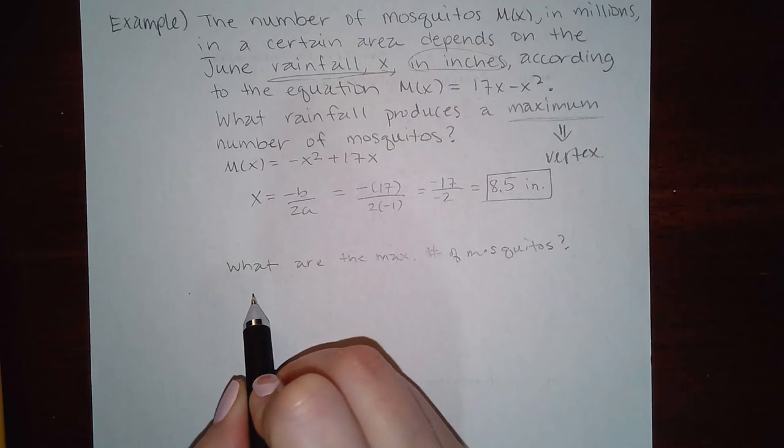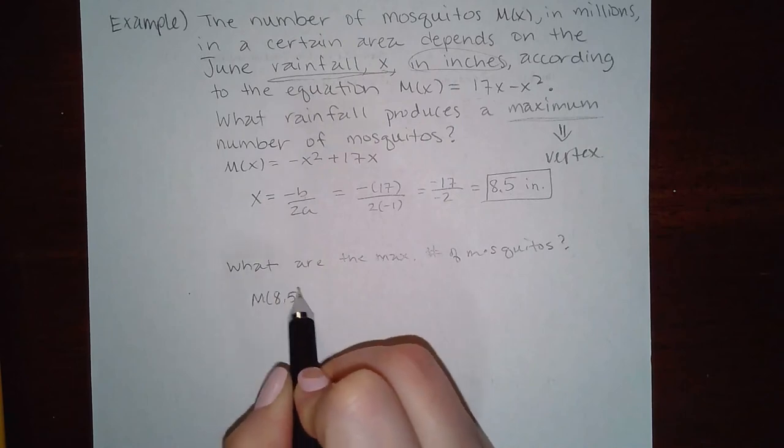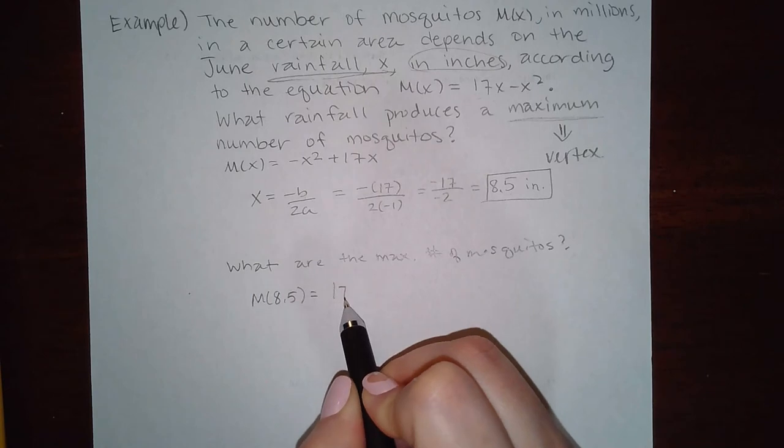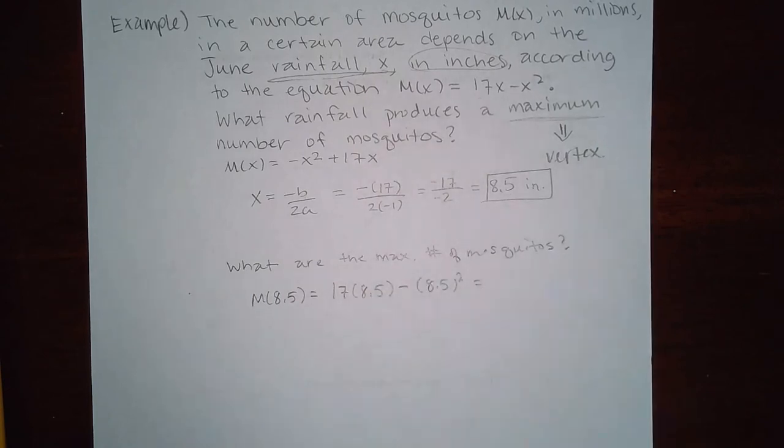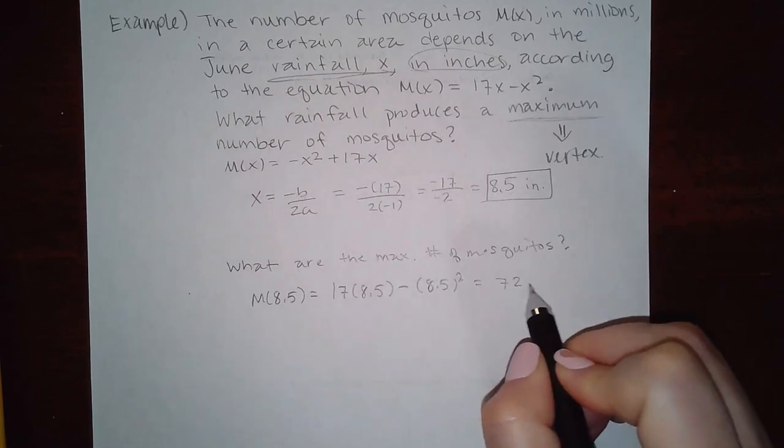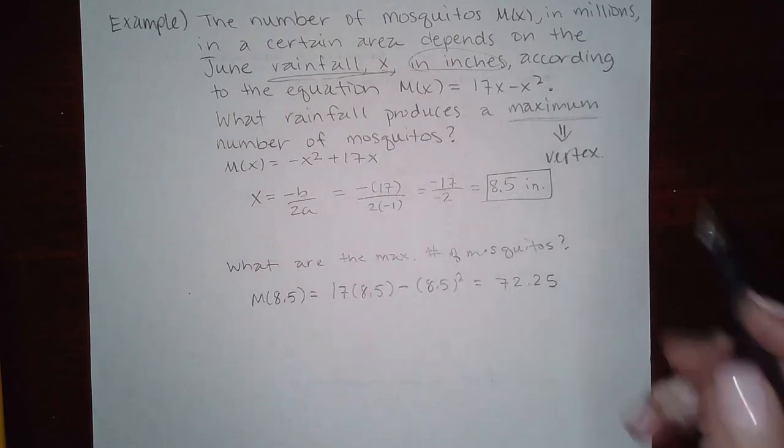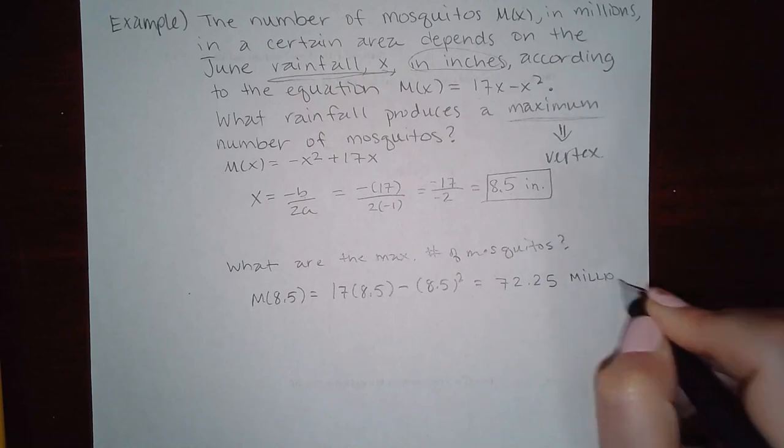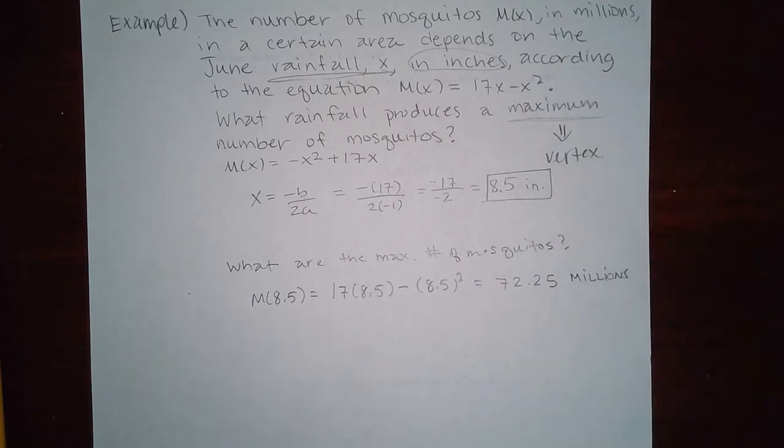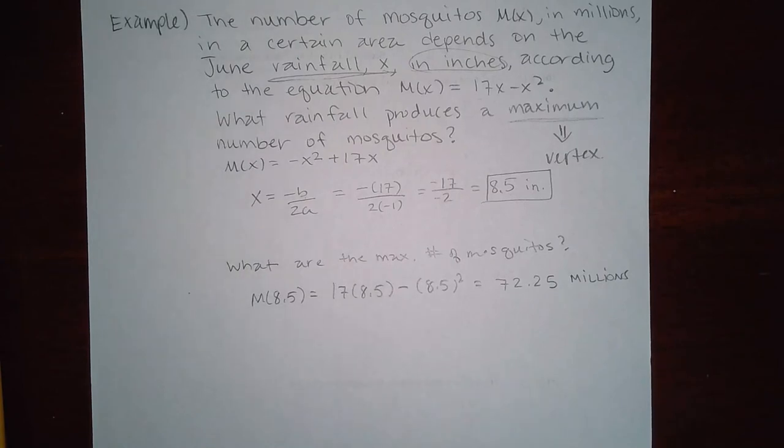So you have to do 17 times 8.5 minus 8.5 squared. And let's see what we get. I get 72.25, and it says that this one's in millions. So it's 72.25 million. And that's it for this section.